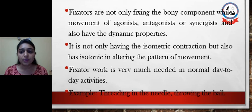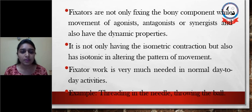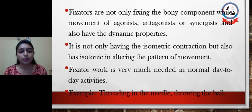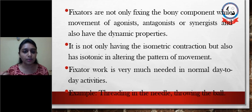Fixators are not only having isometric contraction but also isotonic contraction in altering the pattern of movement. Usually fixators work with isometric contraction so that agonist and synergist can work easily, but in dynamic activity they also work with isotonic contraction — which is very much needed in normal day-to-day activity. For example, threading a needle or throwing a ball — every time we throw a ball, the rest of the body remains stable with the help of fixator muscles so we can focus only on the movement we are doing.